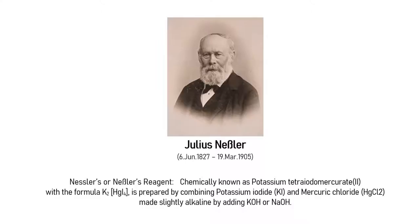It is chemically known as potassium tetraiodomercurate 2 with the formula K2HgI4. It is prepared by combining potassium iodide and mercury chloride, which is then made slightly alkaline by adding potassium hydroxide or sodium hydroxide.